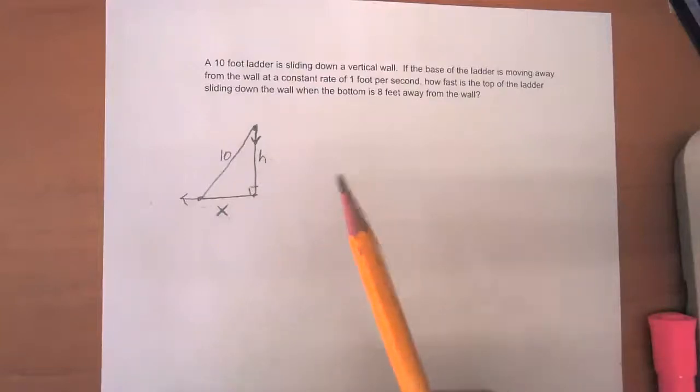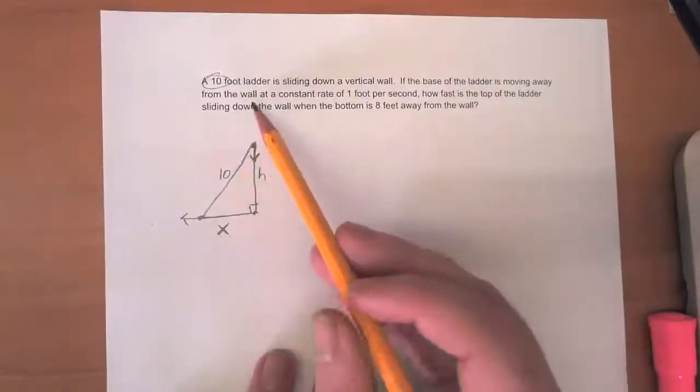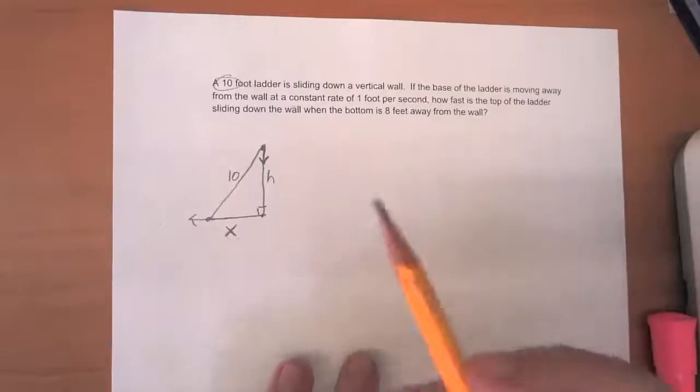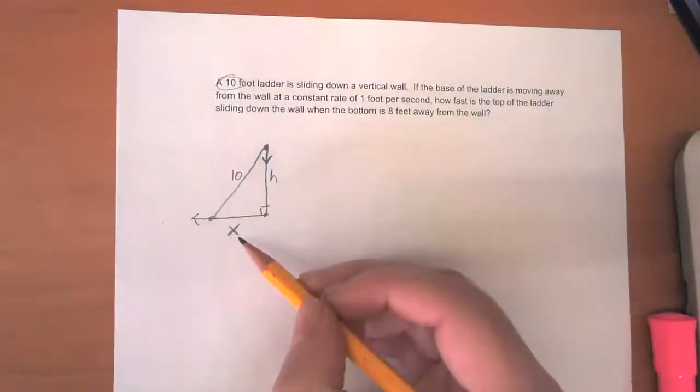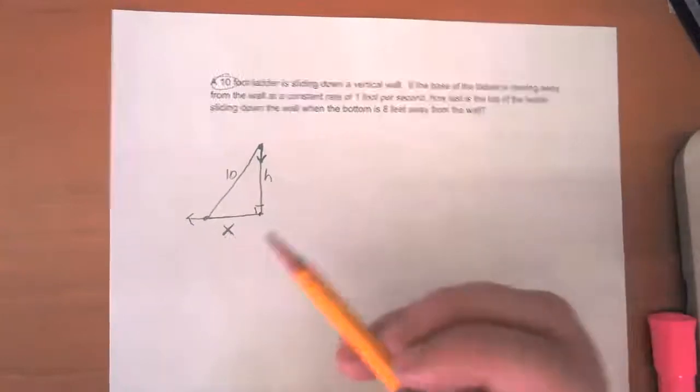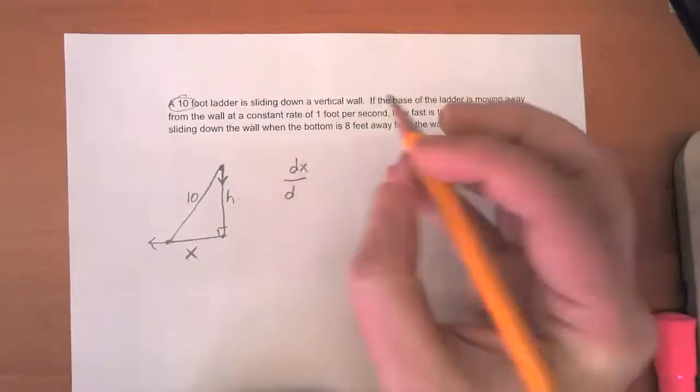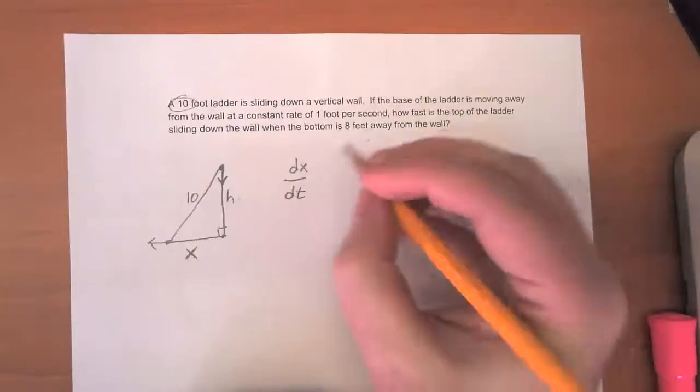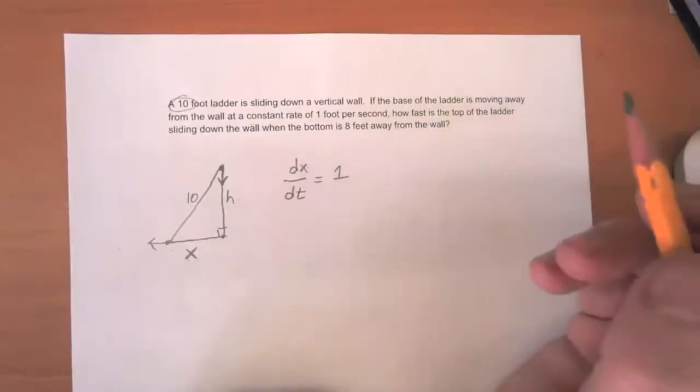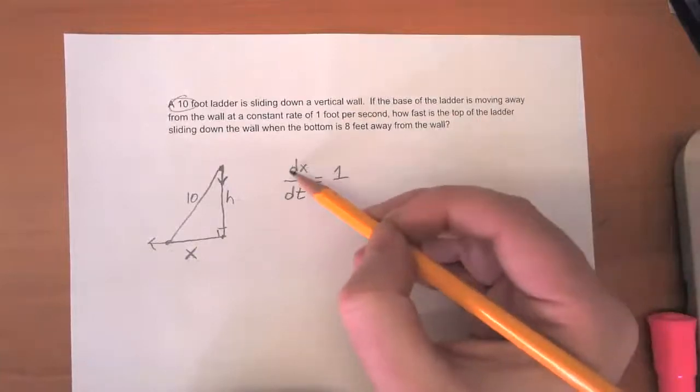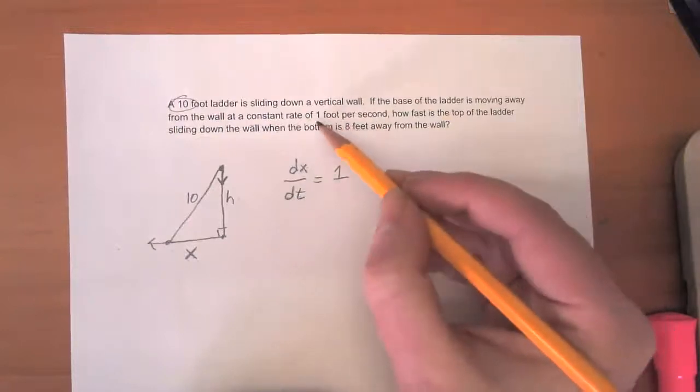So let's think about how we can describe that. We've got a 10-foot ladder, so I put the 10 in here. If the base of the ladder is moving away from the wall at a constant rate of 1 foot per second, how can we describe that? Well, we're talking about the rate of change of X based on time. So the way that we can write that is that the derivative of X with respect to time, dx/dt, is equal to 1. Over every one second, X is changing by one foot—that change in the distance in feet divided by the change of time in seconds is 1 foot per second. So that's how you can express that statement in calculus language.